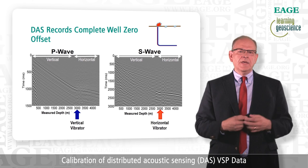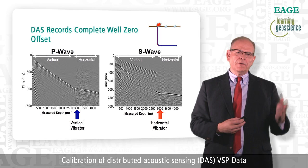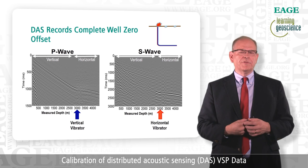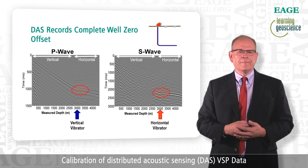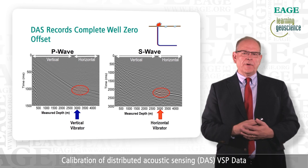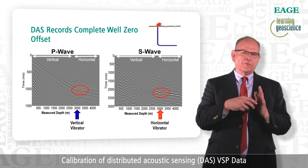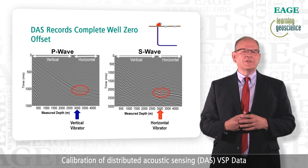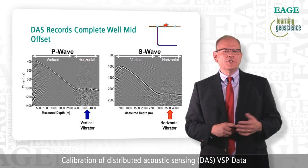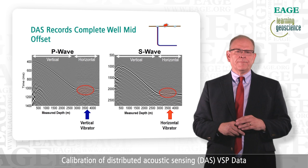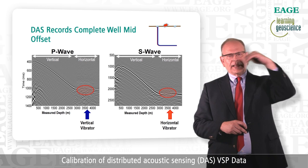Now, in this figure, we show the DAS response for the complete well, including both the vertical and horizontal sections. The left panel shows the P-wave response for the zero-offset source, and the right panel shows the shear wave response. Note that the vertical axis timescales are not the same. The area circled by the red oval denotes the heel of the well. At this location, the seismic energy is hitting the fiber orthogonally to the direction of the fiber cable. From theory, we know that the fiber response in this direction to both P-wave and shear waves is null, so we see a drop in the amplitude of the first break at this location. This figure shows the same result for the mid-offset location. As before, we see a drop in the first break amplitudes when the source is located directly above that portion of the horizontal fiber.